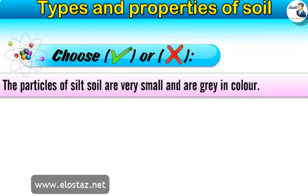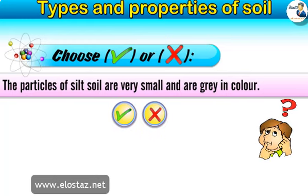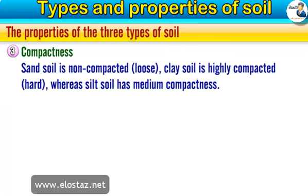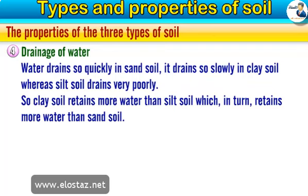True or false: the particles of silt soil are very small and are gray in color. It's false. Number three, compactness: sand soil is non-compacted and loose. Clay soil is highly compacted and hard. Silt soil has medium compactness. Number four, drainage of water: water drains very quickly in sand soil, drains very slowly in clay soil, whereas silt soil drains rather slowly. So clay soil retains more water than silt soil, which in turn retains more water than sand soil.